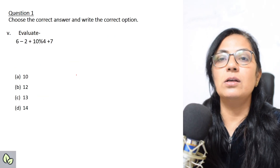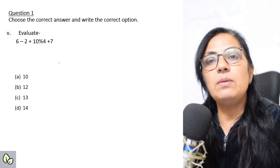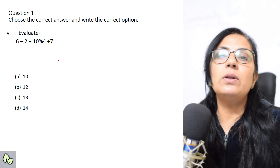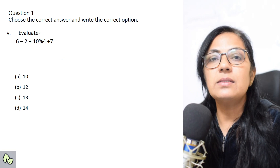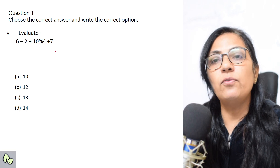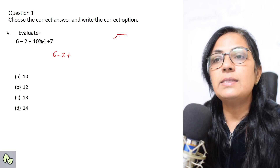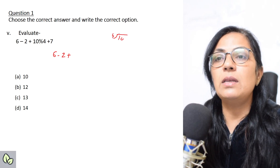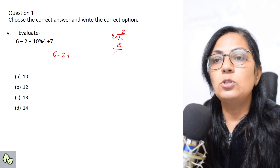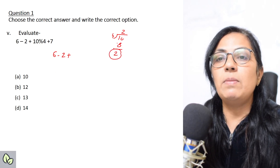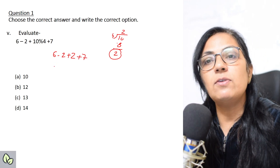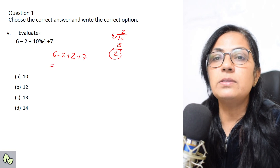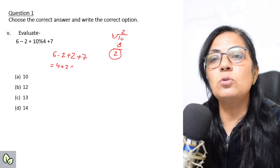Next question: evaluate 6 - 2 + 10 % 4 + 7. Here minus, plus, and modulus — three mathematical operators — are given. The modulus operator has higher precedence, so it is solved first. 10 % 4 gives remainder 2, since 4 times 2 is 8 and remainder is 2. So the expression becomes 6 - 2 + 2 + 7. Since plus and minus have the same priority, left to right: 6 - 2 = 4, then 4 + 2 = 6.